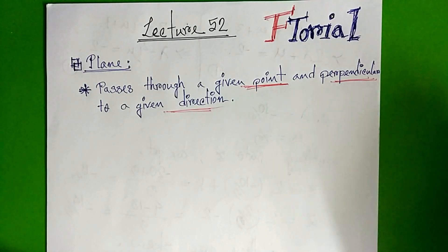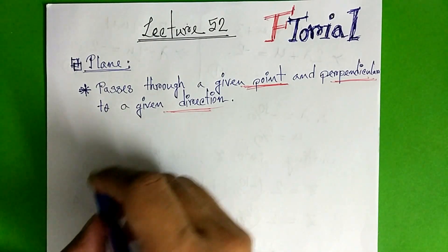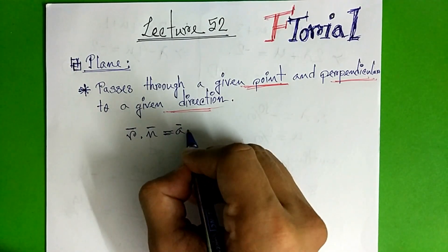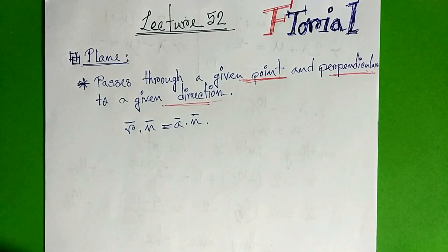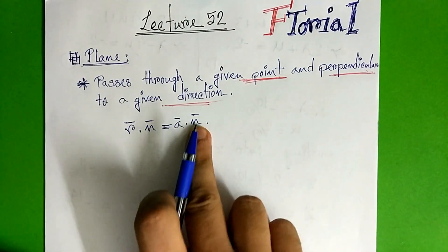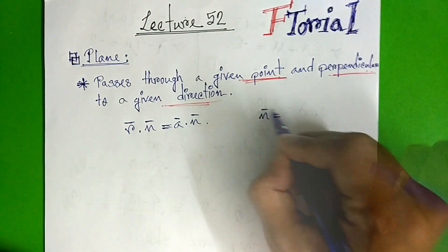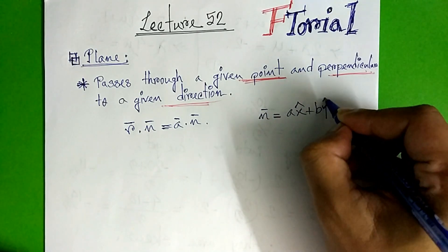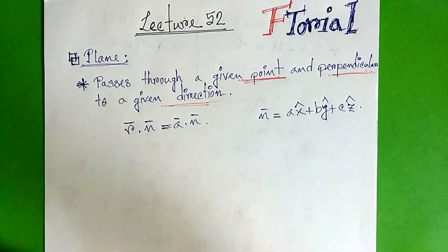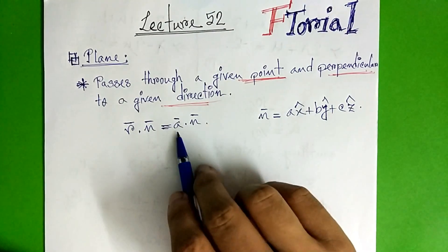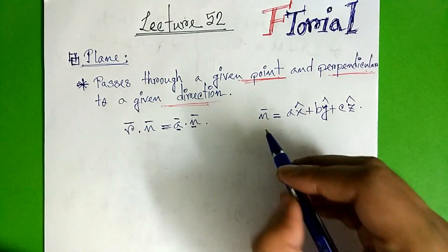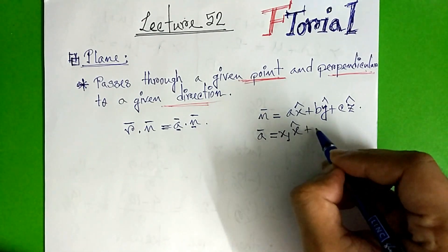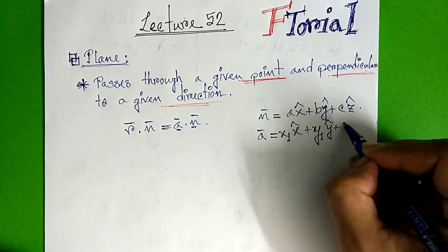So here we have r dot n equal to a dot n. Here n is the direction vector n-bar, so n-bar equals the direction vector with components a, x plus b, y plus c, z. Point a has coordinates x1, y1, z1.